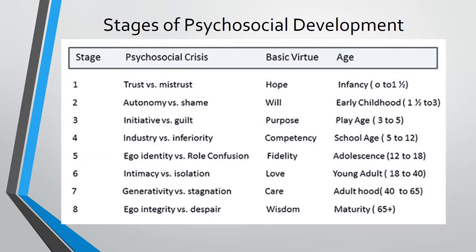Stage 5 — Ego Identity vs. Role Confusion; Stage 6 — Intimacy vs. Isolation; Stage 7 — Generativity vs. Stagnation; Stage 8 — Ego Integrity vs. Despair. The first outcome in each pair is what we want. At each stage respectively, we want the outcome to be trust, autonomy, initiative, industry, ego identity, intimacy, generativity, and ego integrity. Each stage yields a basic virtue: hope, will, purpose, competency, fidelity, love, care, and wisdom.